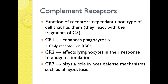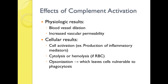Let's talk about the complement receptors. The function of the receptors is dependent upon the type of cell that has them. CR1 enhances phagocytosis and is the only receptor on RBCs. CR2 affects lymphocytes in their response to antigen stimulation, and CR3 plays a role in host defense mechanisms such as phagocytosis. Effects of complement activation include blood vessel dilation, increased vascular permeability, cellular activation and production of inflammatory mediators, sometimes hemolysis, and opsonization — which leaves the cell very vulnerable to phagocytosis. It's like putting A1 steak sauce on the steak; it just makes it extra tasty.